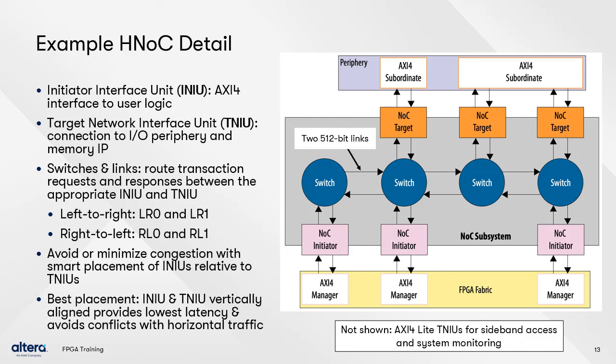These switches have two 512-bit links in both horizontal directions to connect to adjacent switches. Transaction requests and responses are passed into the switch network and can be transferred from left to right on the LR0 and LR1 links, or right to left on the RL0 and RL1 links from each switch. Data can flow from left to right and from right to left simultaneously, as long as a link is available in the correct direction. Not shown in the diagram are sideband TNIUs that connect to the periphery for monitoring, control, and debugging of an interface.